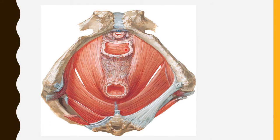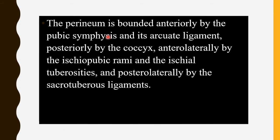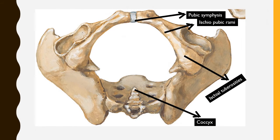The perineum is bounded anteriorly by the pubic symphysis and its arcuate ligament, posteriorly by the coccyx, anterolaterally by the ischiopubic ramus and ischial tuberosities, and posterolaterally by the sacrotuberous ligaments. The sacrotuberous ligament extends from the sacrum to the ischial tuberosities, forming the posterolateral boundaries of the perineum.